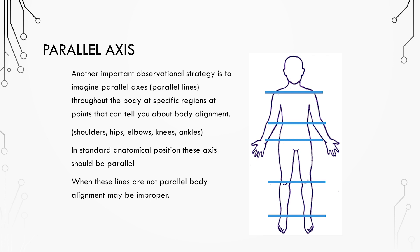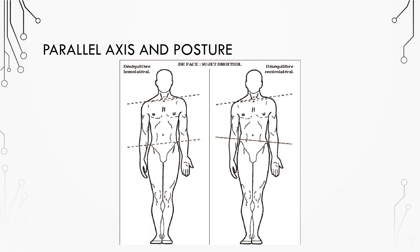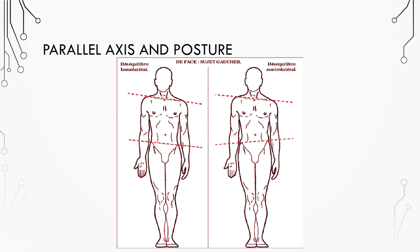In standard anatomical position, these axes should be parallel. When they're not parallel, body alignment may be an issue, or it could just mean that they're in a specific phase of the skill where a certain alignment is required. This strategy is used to determine postural abnormalities in the frontal plane because drawing these lines visually enhances asymmetries and enables the observer to notice abnormalities much easier.